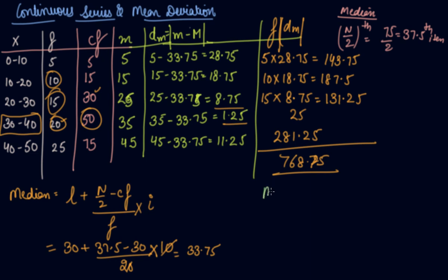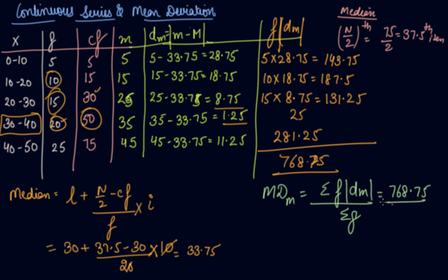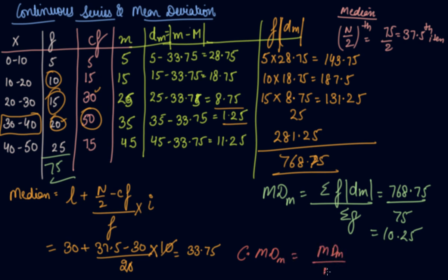Now we have to find out the mean deviation using median. That is: summation of frequency into deviation from median, divided by summation of frequency. So 768.75 divided by total frequency 75 comes out to be 10.25. We can also find out the coefficient of mean deviation through median: mean deviation from median divided by median, which is 10.25 divided by 33.75. We get an answer of approximately 0.31. This is how you calculate mean deviation using median in the continuous series.